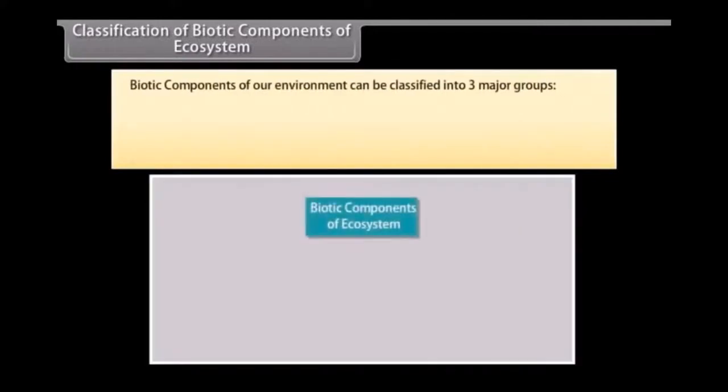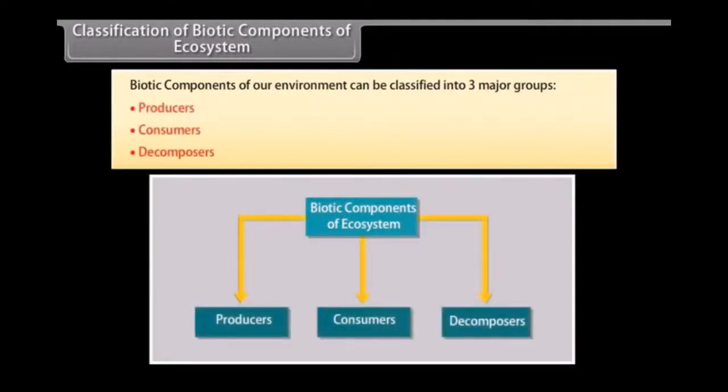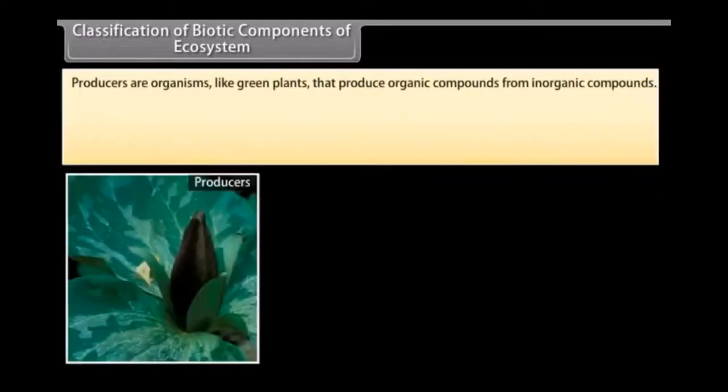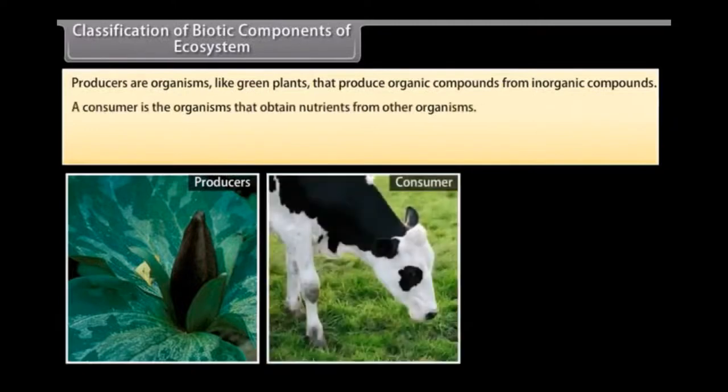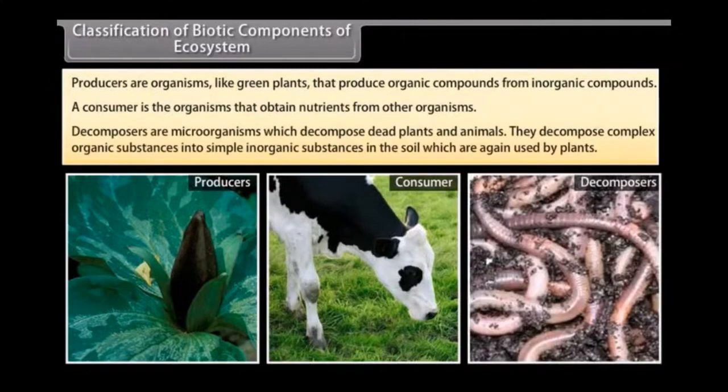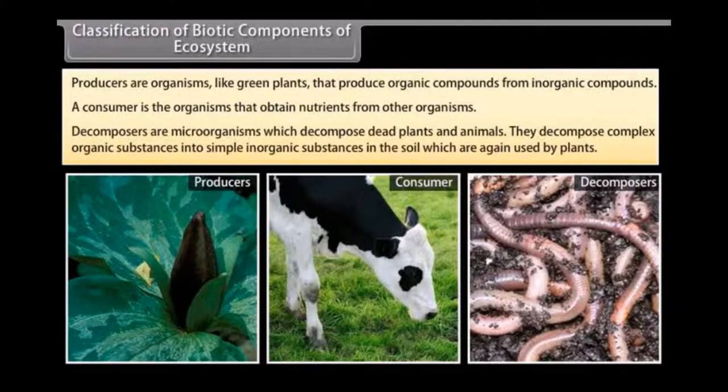Classification of biotic components of ecosystem. Biotic components of our environment can be classified into three major groups: producers, consumers and decomposers. Producers are organisms like green plants that produce organic compounds from inorganic compounds. A consumer is the organism that obtains nutrients from other organisms. And the decomposers are microorganisms which decompose dead plants and animals. They decompose complex organic substances into simple inorganic substances in the soil which are again used by the plants.